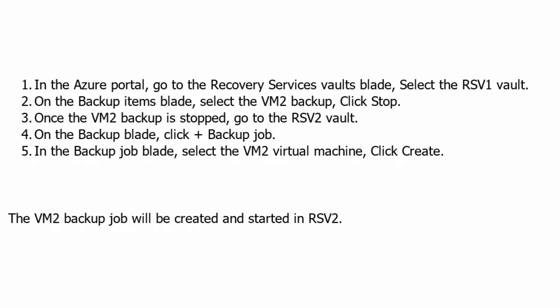The second step would be that once the VM2 backup is stopped, we will go to RSV2 vault on the backup blade and we will create a new backup. On the backup job blade we will select VM2 virtual machine and create a backup job. The backup job for VM2 will be created and started in RSV2. Therefore the first step would be to stop the existing backup job on RSV1. Let's move back to the question.